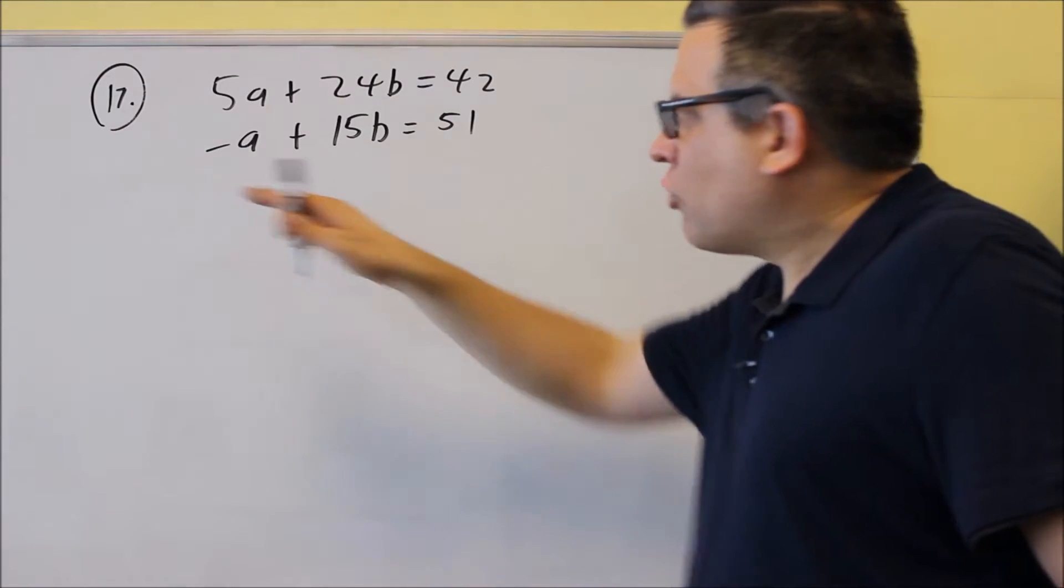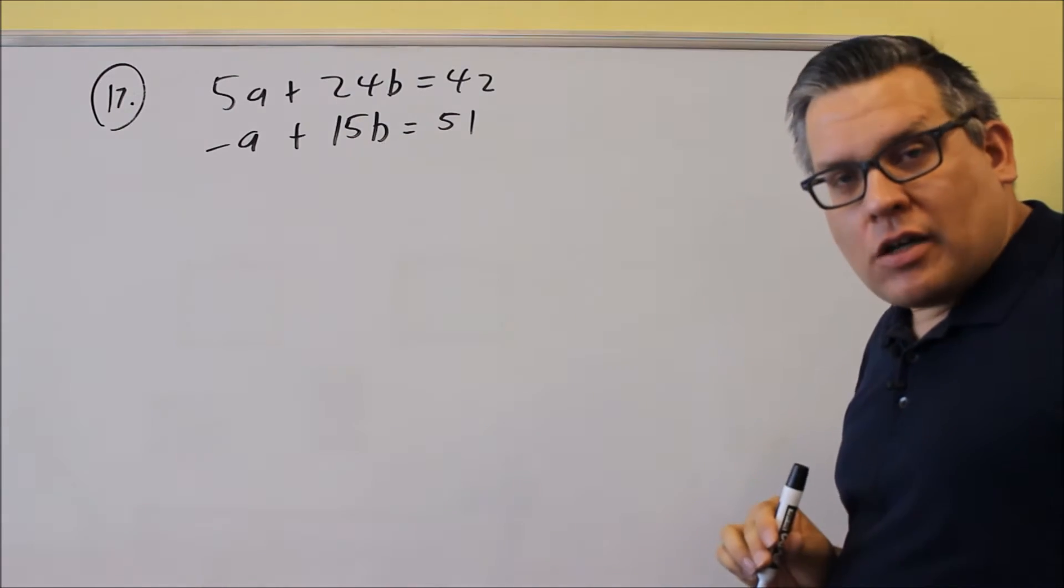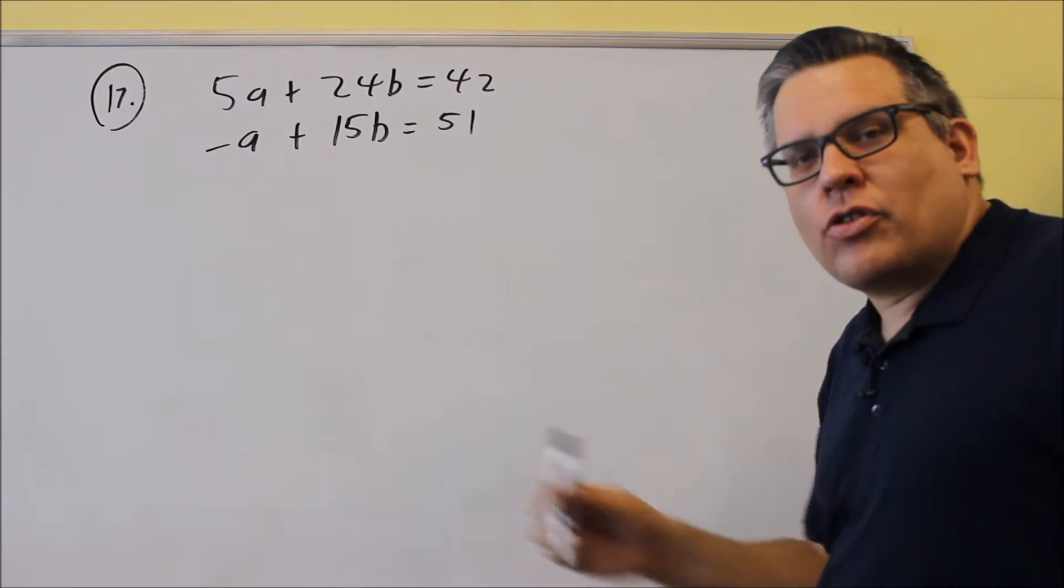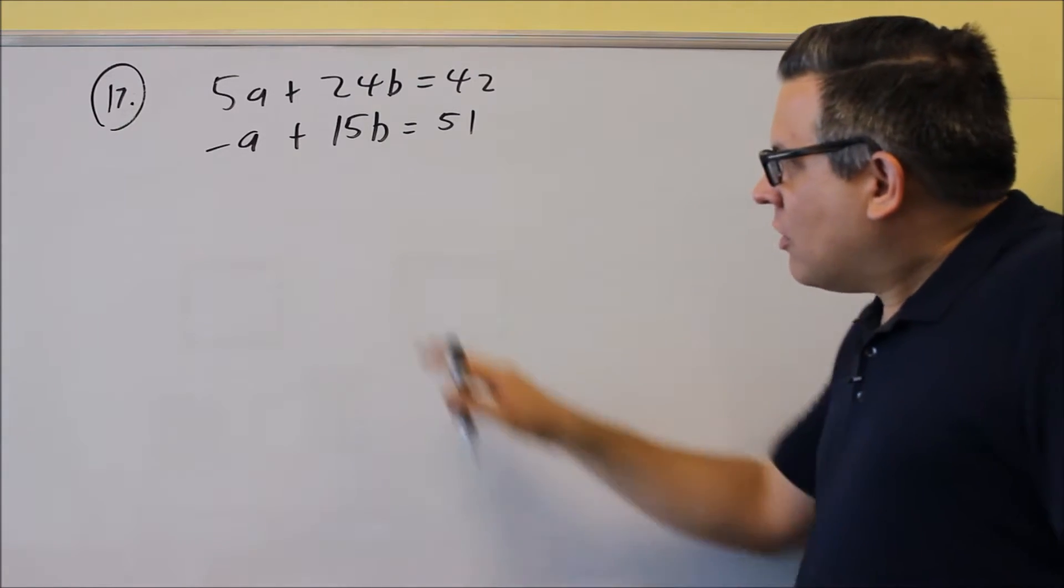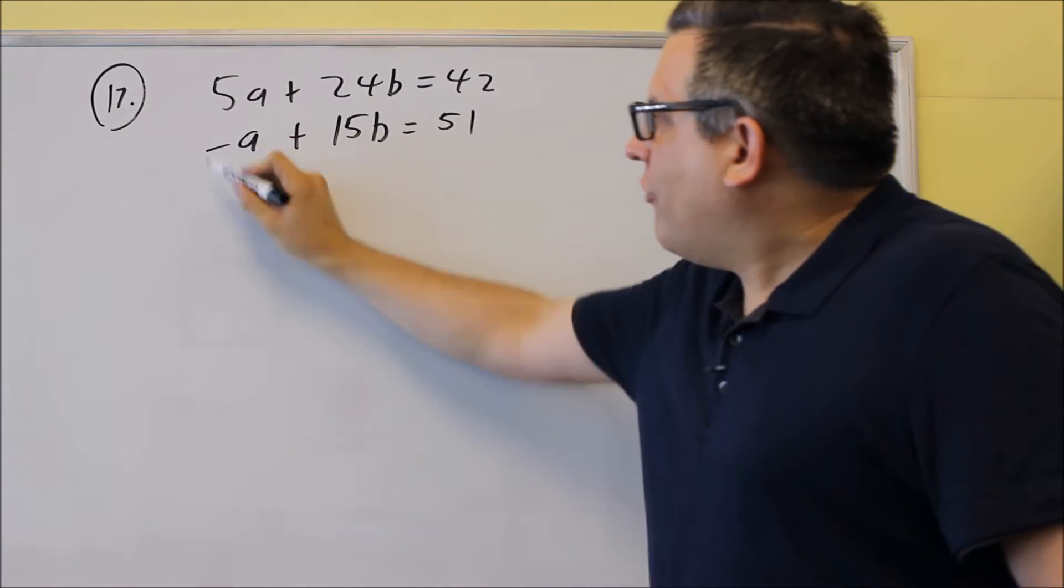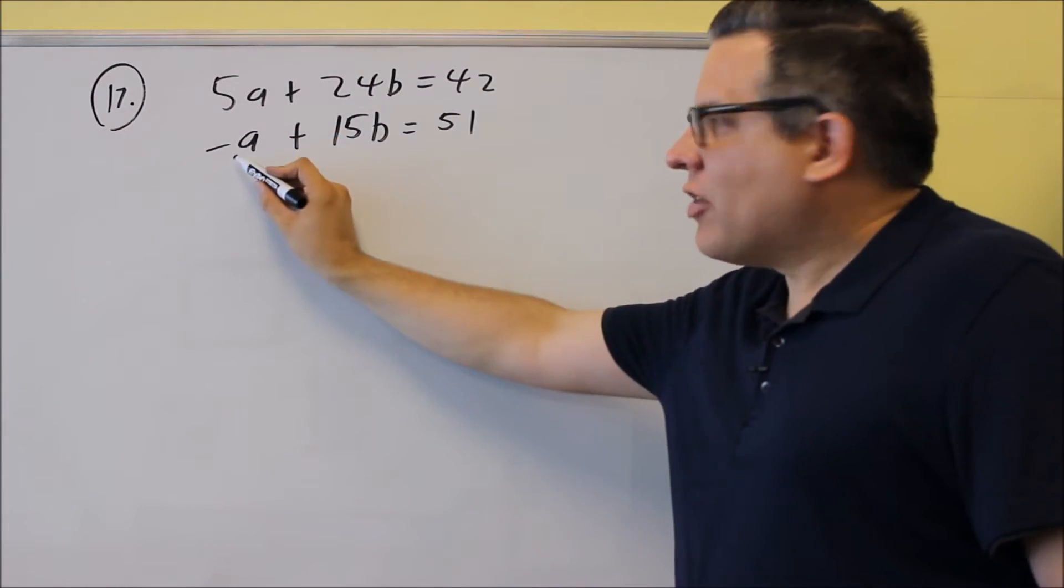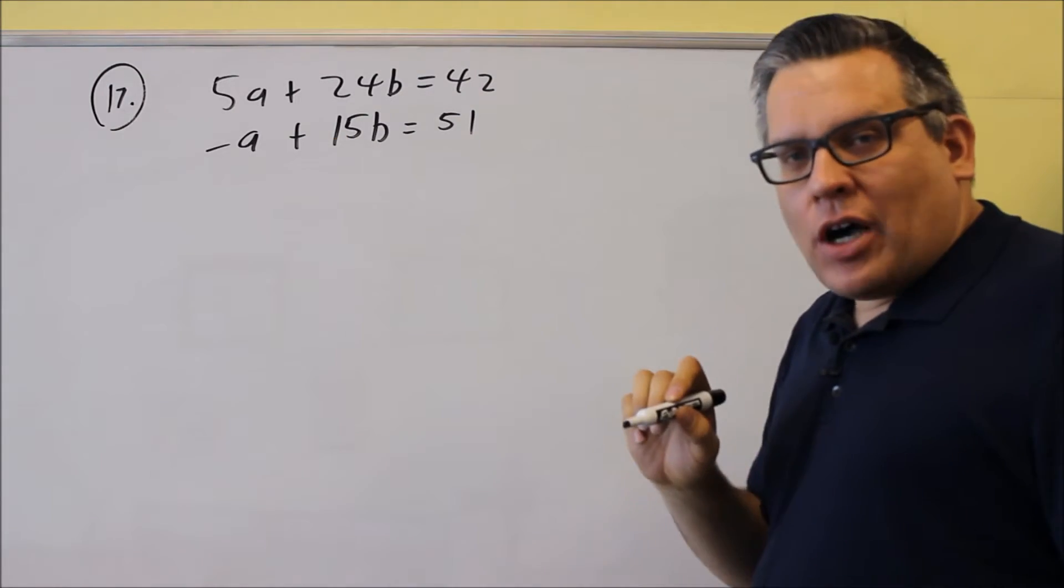Okay, so even though this one we could definitely solve it by elimination, I'm going to purposely solve it by substitution just so you can see that method for those of you that want to do it this way. So when you do substitution, ideally you want to look for a variable that's by itself that doesn't have a number in front of it. This does have a negative one in front, but that's easy to divide by.